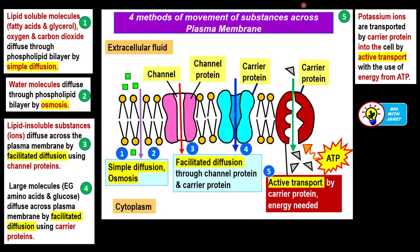The second type of movement is osmosis — the diffusion of water molecules or molecules of a solvent through the phospholipid bilayer, again from a region of higher concentration to a region of lower concentration, or down the concentration gradient. Water molecules diffuse through the phospholipid bilayer.